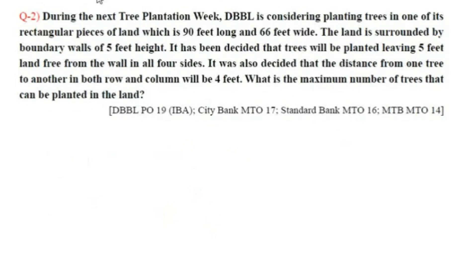Question number two: During the next tree plantation week, DBBL is considering planting trees in one of its rectangular pieces of land which is 90 feet long and 66 feet wide. The land is surrounded by boundary walls of five feet height. It has been decided that trees will be planted leaving five feet of land free from the wall on all four sides, and the distance from one tree to another in both row and column will be four feet.